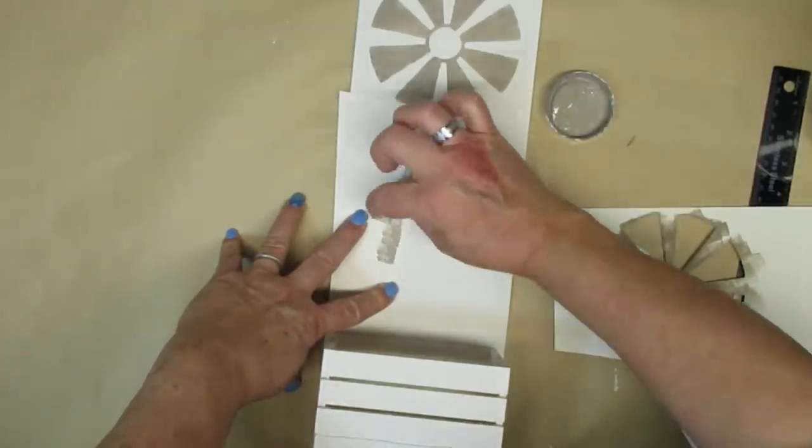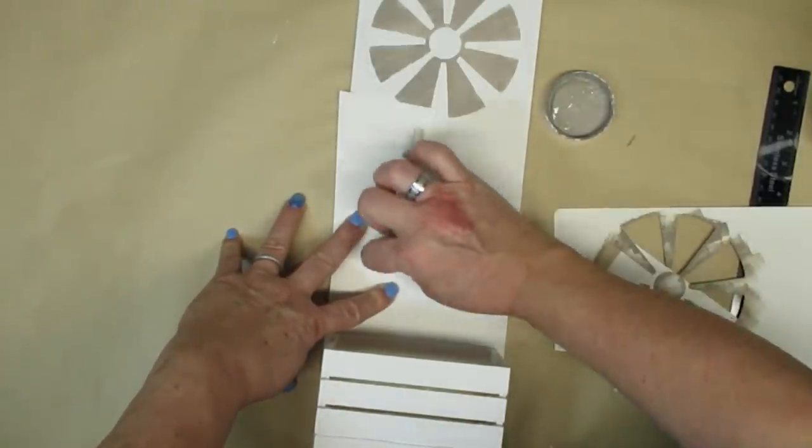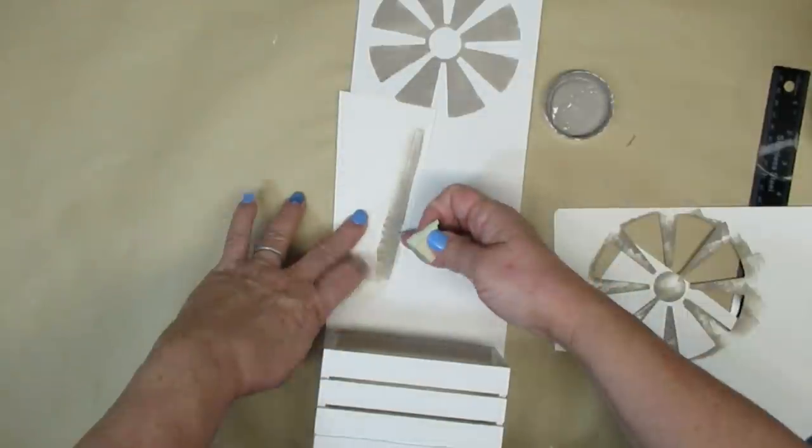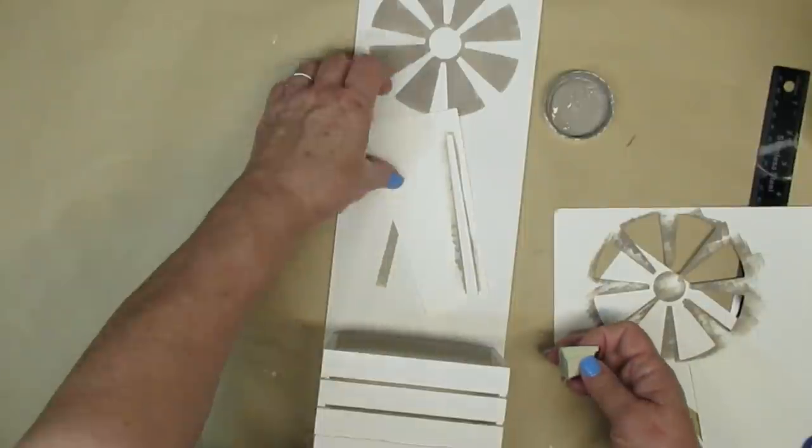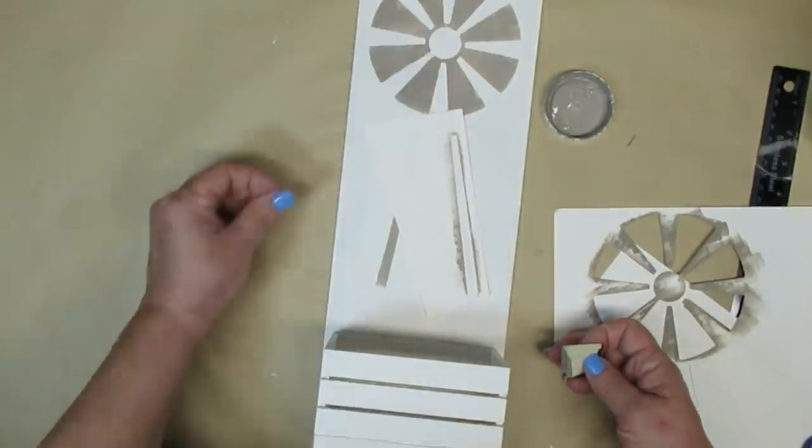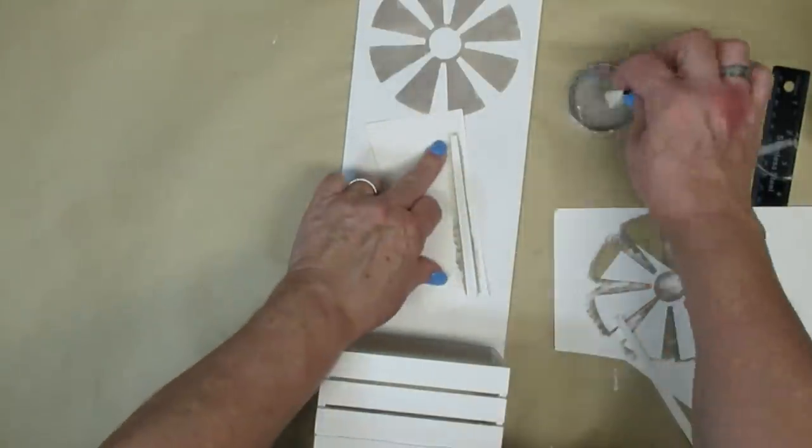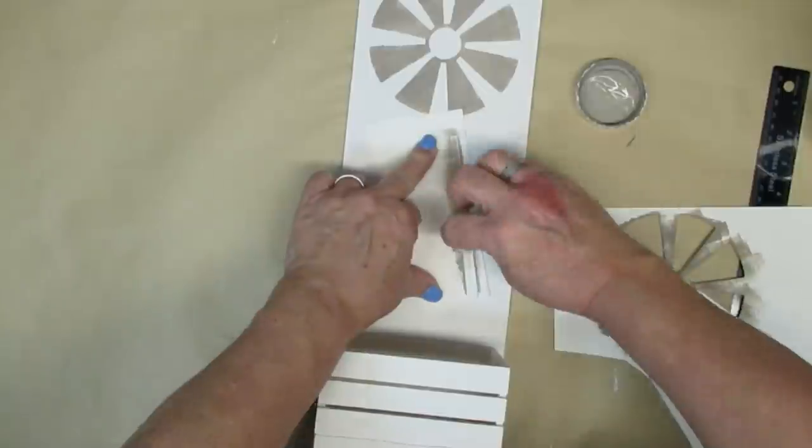For the legs of the windmill I just cut out a strip of paper from the cardstock about a quarter of an inch wide and again I'm just using my makeup sponge and I'm just going to have them on an angle. I'll do three kind of pointing in towards the windmill and then one down the center.